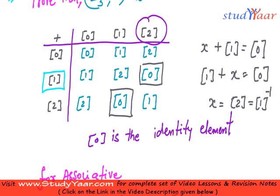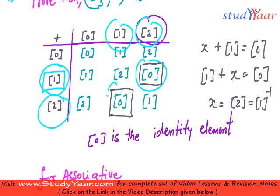Since I have 1 plus 2 equal to 0 and I have 2 plus 1 equal to 0, therefore the inverse of 2 is 1 and also the inverse of 1 is 2, because 1 plus 2 is 0 and 2 plus 1 is also 0.